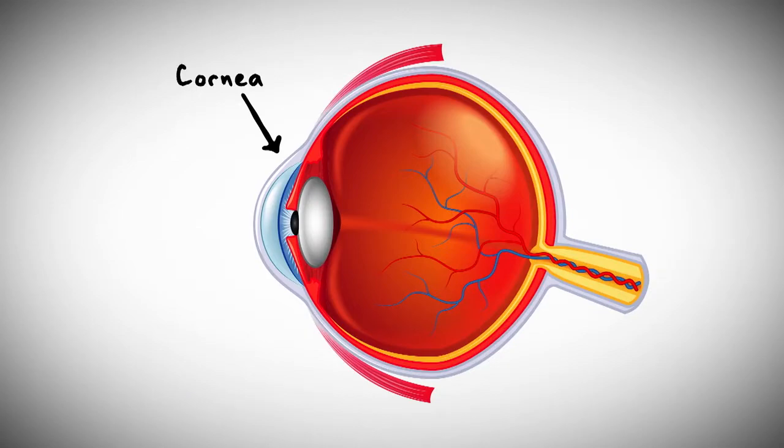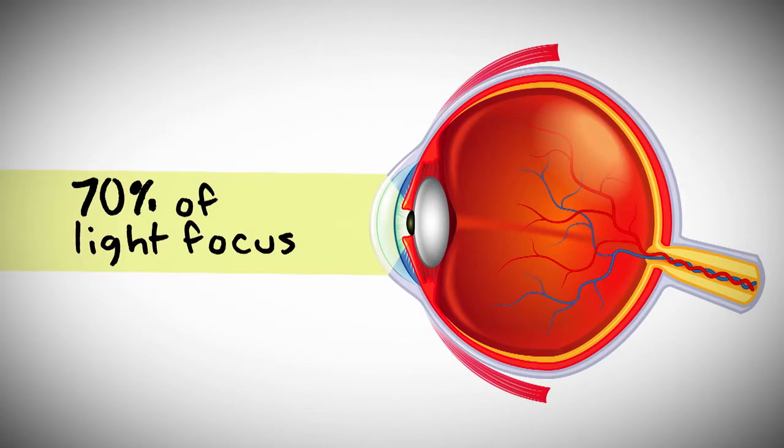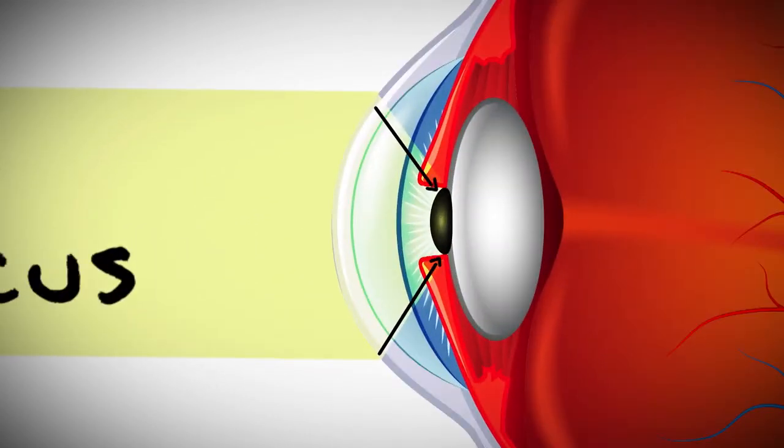The cornea is responsible for approximately 70% of light focus. It bends light in precise ways to enter your pupil, just like a camera lens.